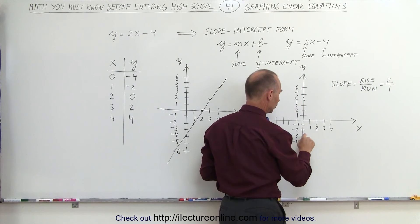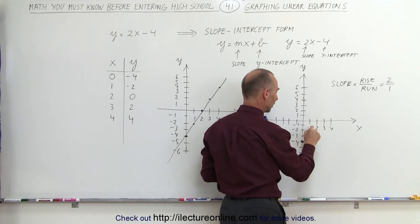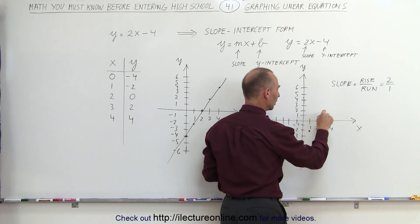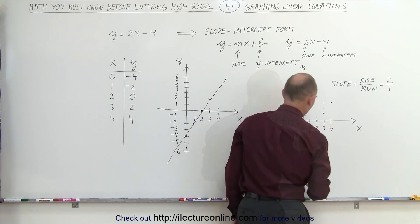Again, I rise 2 and run 1. From negative 2 I go to 0, and I rise 1. Then again, I rise 2 and I run 1. I rise 2 and run 1. This continues along the line.